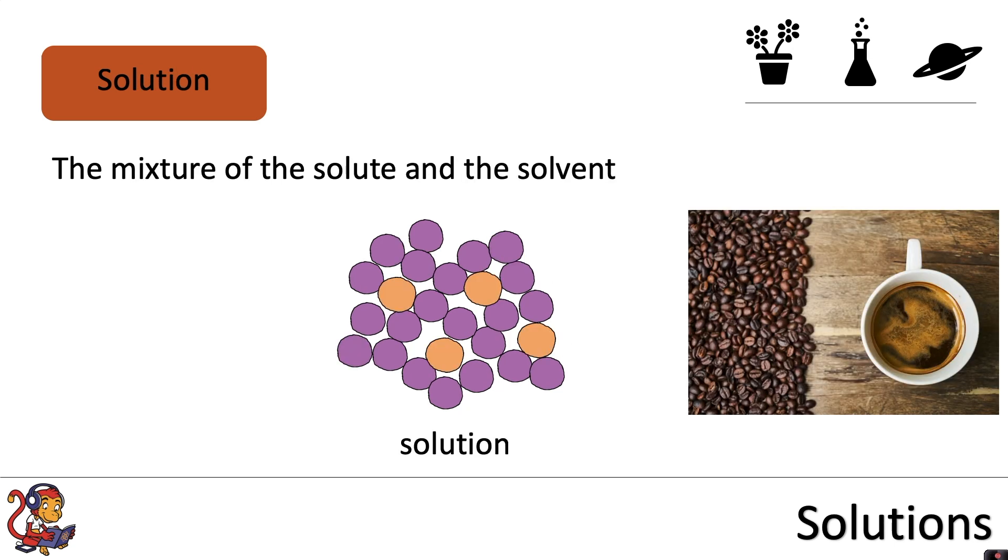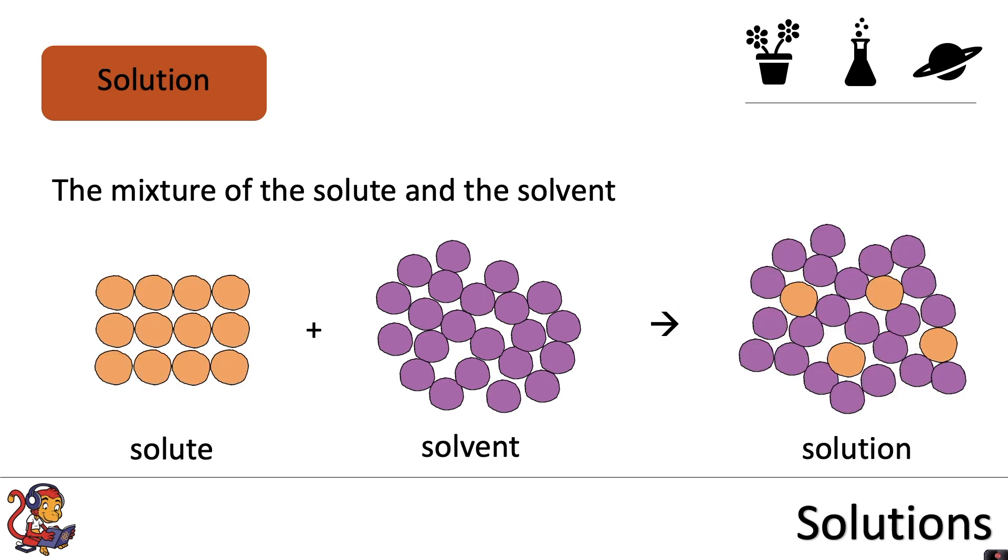The solution then is the mixture of the solute and the solvent. So we would describe the coffee with the water and the coffee grains and the sugar dissolved into that as the solution. So putting all those three words together: the solution is the mixture of the solute and the solvent. So you have a solute, you dissolve that with a solvent, and you produce a solution.